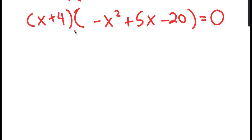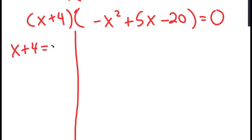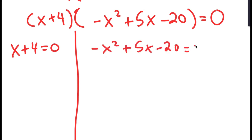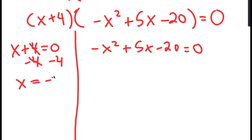So I get two equations from this. I get x plus 4 equals 0, and negative x squared plus 5x minus 20 equals 0. For x plus 4 equals 0, all we have to do is subtract 4 on both sides and we get x is equal to negative 4.